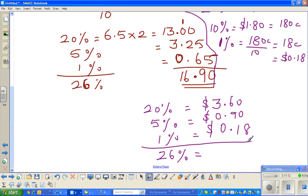So 0 plus 0 plus 8 is 8. No remainder. So 6 plus 9 is 15 plus 1 is 16. Line up the decimal. 1 remainder. And 3 plus 1 is 4. So 26 percent will be $4.68.